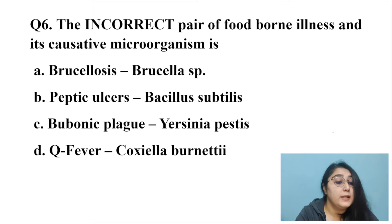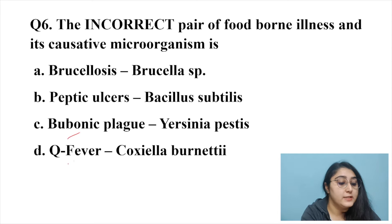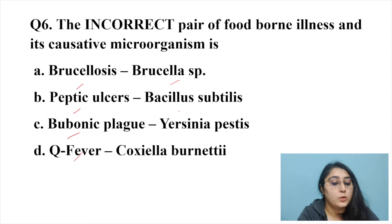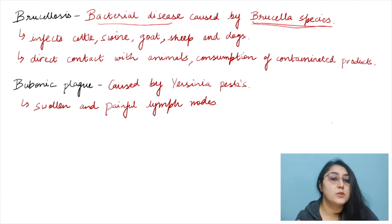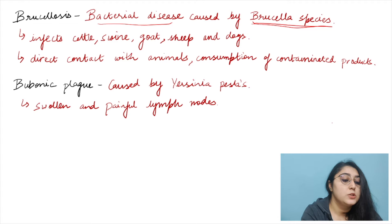Question six asks for the incorrect pair of foodborne illness and its causative microorganism. All options involve bacterial diseases. Brucellosis is caused by Brucella species — very easy to remember as the disease and organism share the same root. It infects cattle, swine, goats, sheep, and dogs; humans get infected through direct contact or contaminated products like cheese and milk.